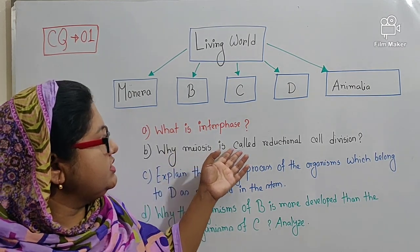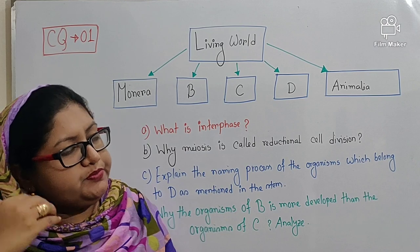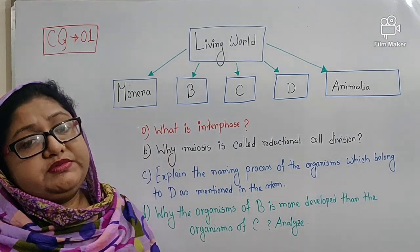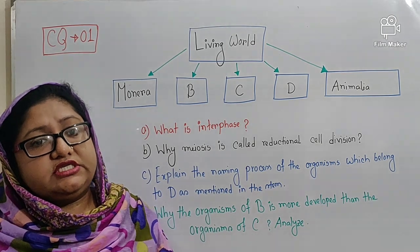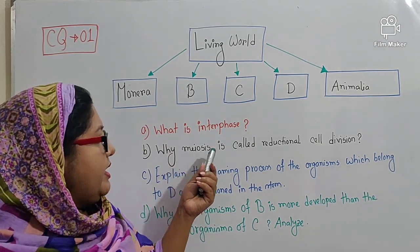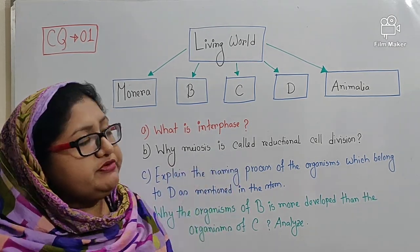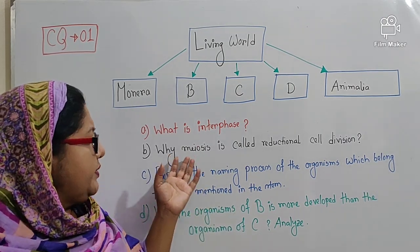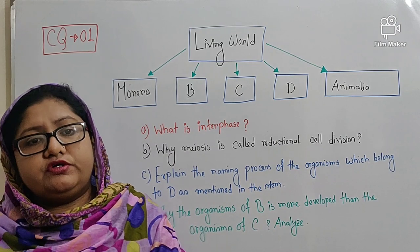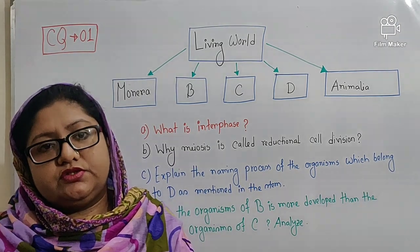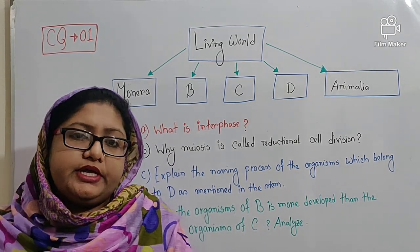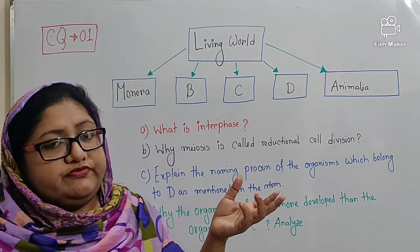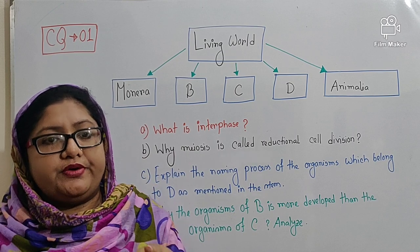The second question: why is meiosis called reductional cell division? In answering this question, you have to first write down the definition — what is meiosis? Then you will explain why it is known as reductional cell division. So the answer will be in two paragraphs.